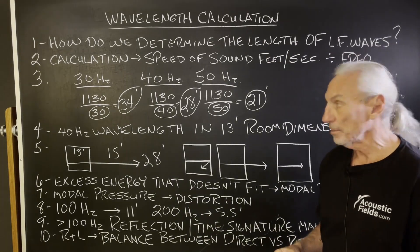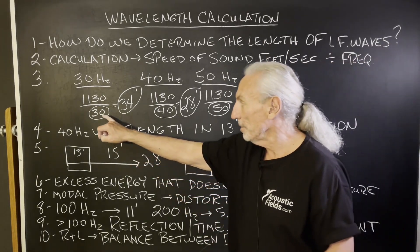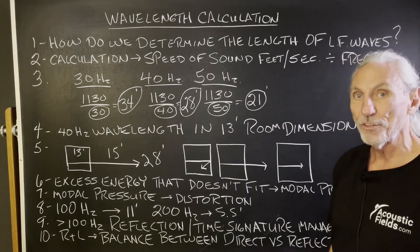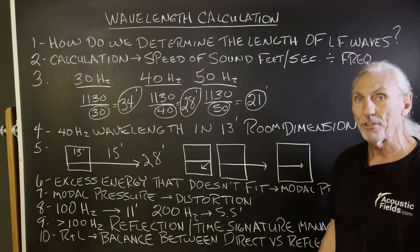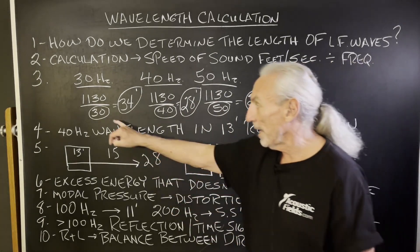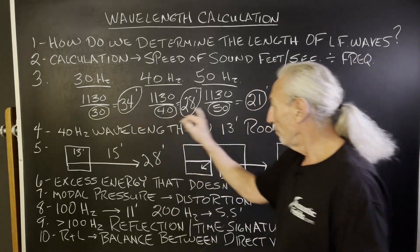How do we determine the length of a low frequency wave? How do we determine the length of 30, 40, and 50 hertz energy? We take the speed of sound, let's just round it to 1130, and we divide by 30, 40, and 50.